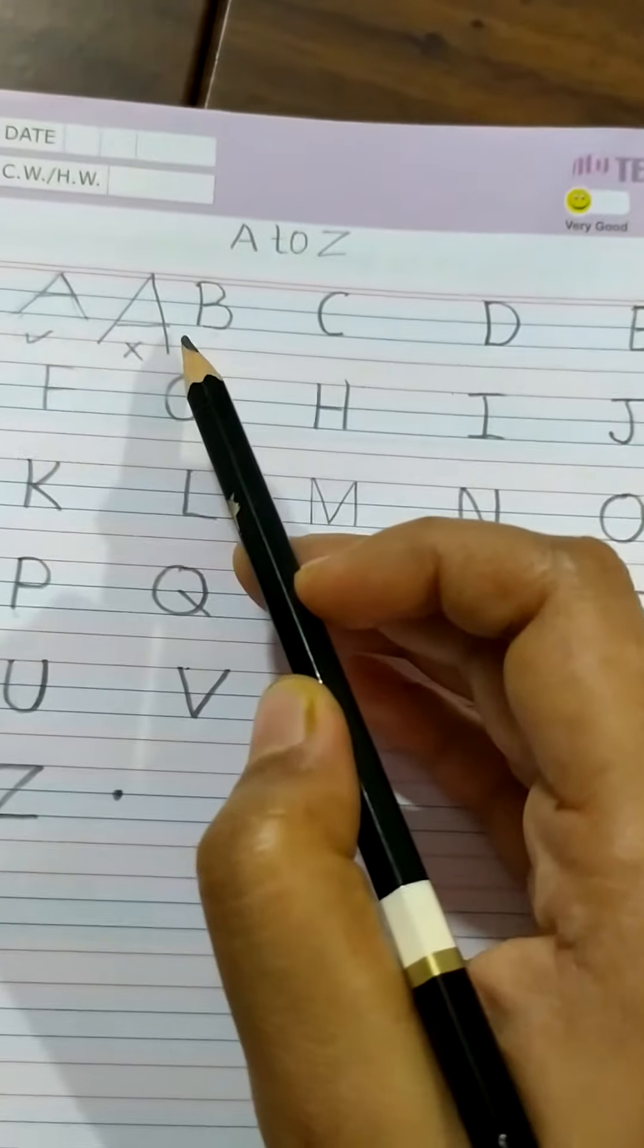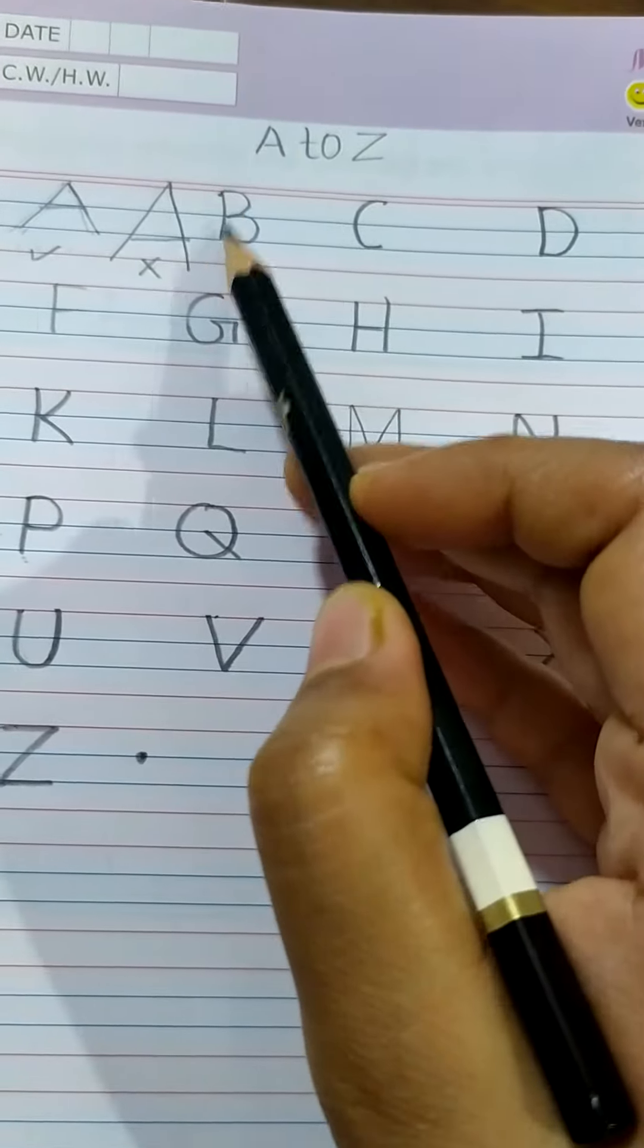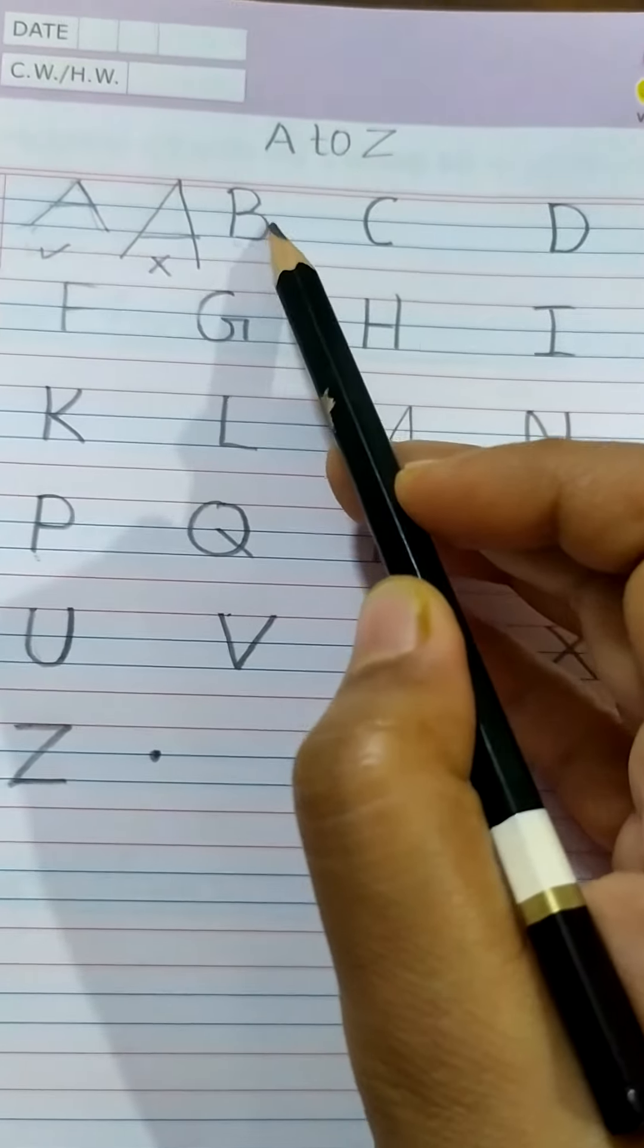In the same way, you should write letter B. Here, red line to blue line, curve, another curve.